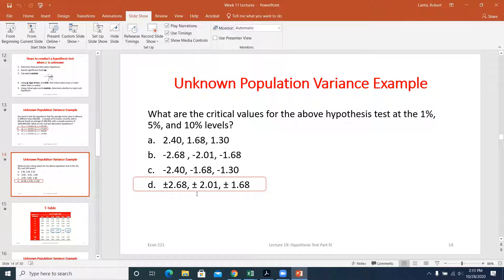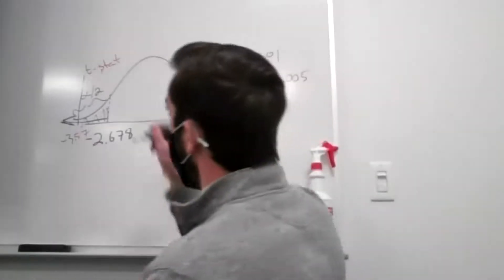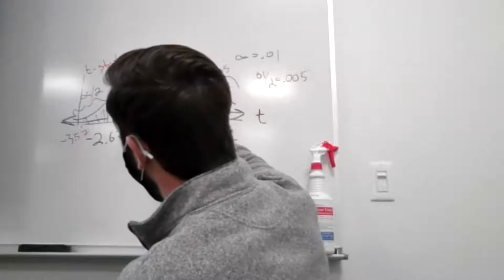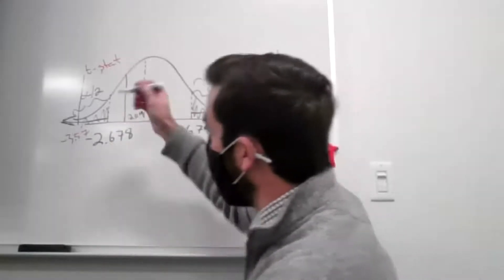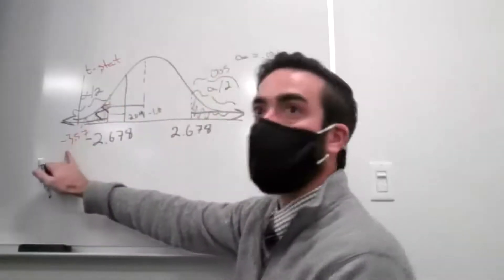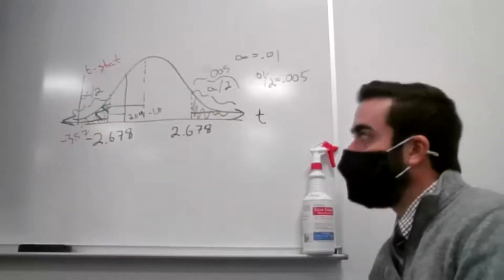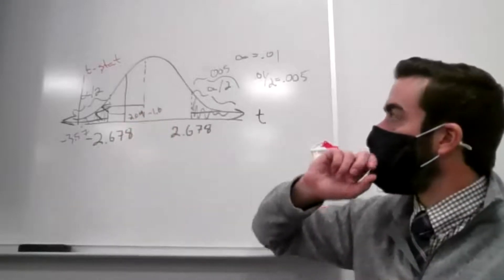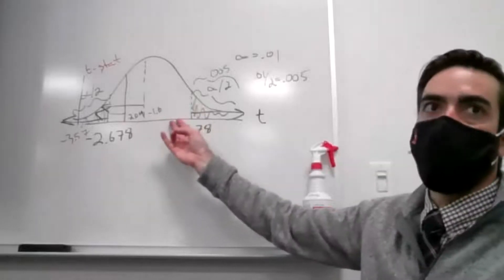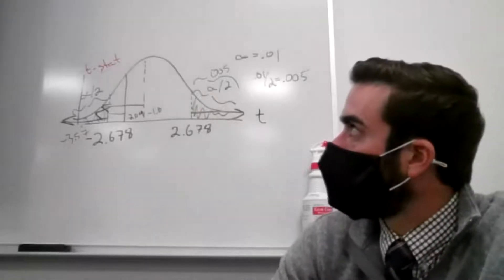Using the critical value approach at the 1% level we reject, and the other two significance levels — with critical values of about negative 2.009 and negative 1.676 — would also lead to rejection. We tested at the highest level and could reject at every significance level. For a two-tailed test, remember to also plot your positive critical value since we have pairs.